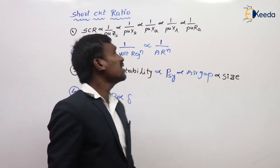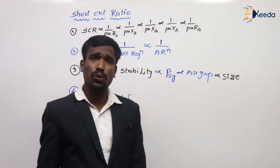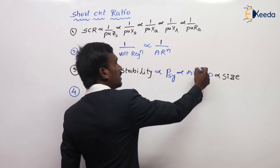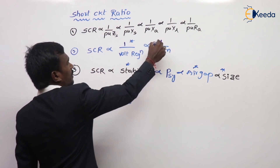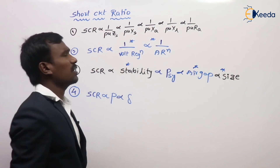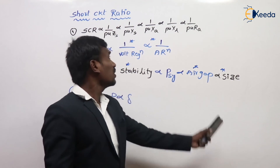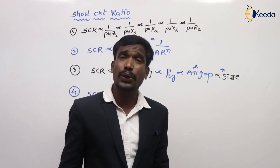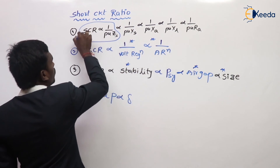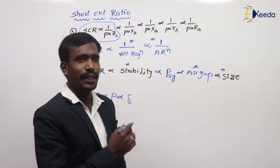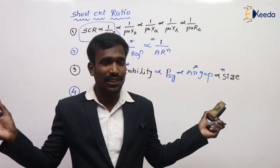SCR is directly proportional to power and SCR is directly proportional to delta. These are the important relations on short-circuit ratio — air gap, size, stability, voltage regulation, armature reaction — they have already been asked in competitive examinations. This is about SCR — short-circuit ratio. The first and most important thing is to remember the formula, then you can derive all the relations.